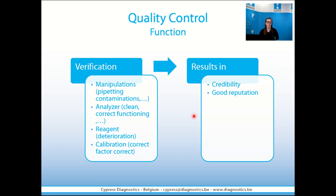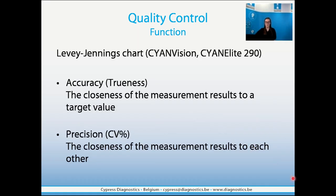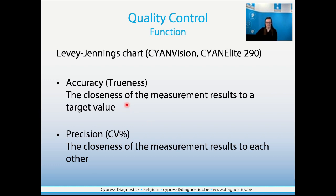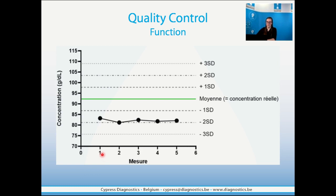What is the consequence of not doing quality controls? You have no proof that the patient results are reliable. How can we monitor quality controls? In our newest systems like the Cyan Vision and Cyan Elite, we use Levey-Jennings charts. Levey-Jennings charts are used to monitor the accuracy and the precision of quality control measurements. Accuracy looks at the closeness of measurement results in comparison with a target value. Precision, on the other hand, looks at the closeness of measurement results in comparison to each other. Let's look at a Levey-Jennings graph to make things easier to explain.